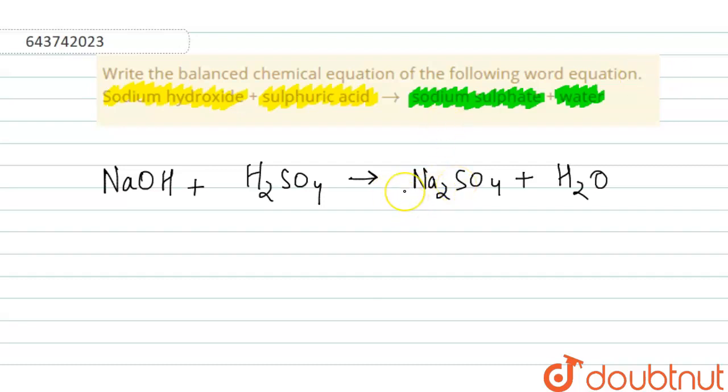The first thing that strikes our mind for balancing this is here we have two atoms of Na and here we have only one. So to compensate the Na atoms on both sides, we will add two over here. We have to do this by hit and trial method. There is no other method to balance equations.